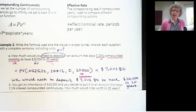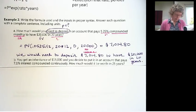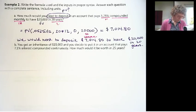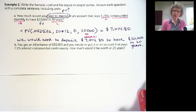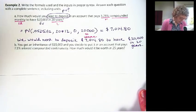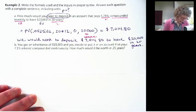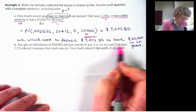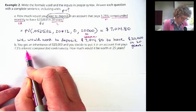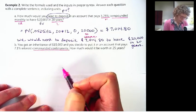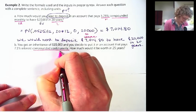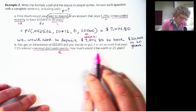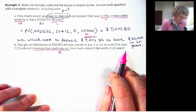Okay. Let's go to the next one. And if you want to, you can pause the video and try it. And then start the video again. That's always a good thing to do. Try it out. Test yourself. Okay. So we'll go through it together. You get an inheritance of $15,000. And you decide to put it in an account that pays 7.1% interest compounded continuously.